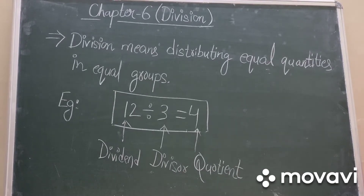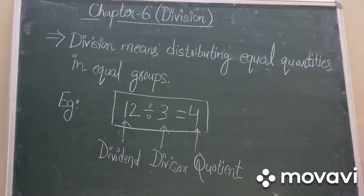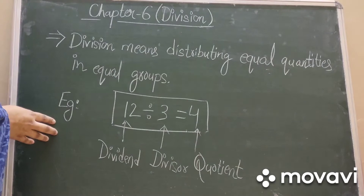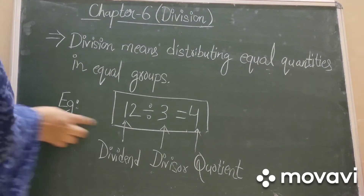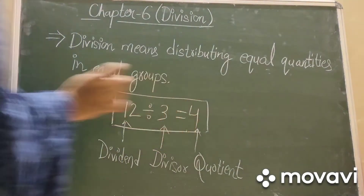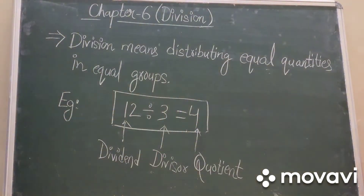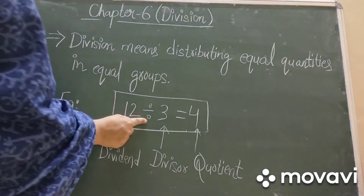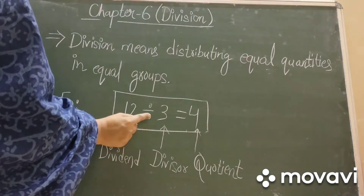So what is division? Division means distributing equal quantities in equal groups. Look at the blackboard. Here I have written an equation of division: 12 divided by 3 is equals to 4. This is the symbol of division.